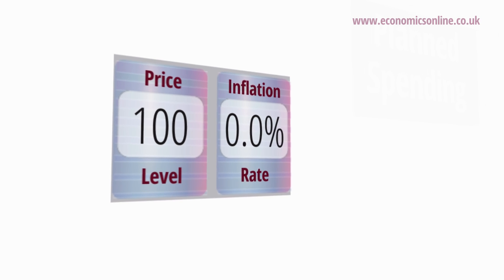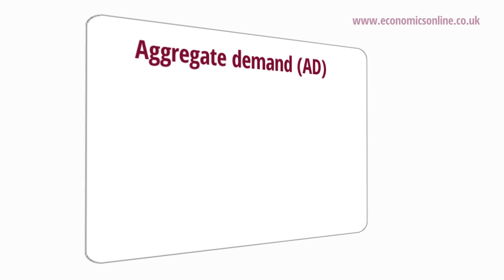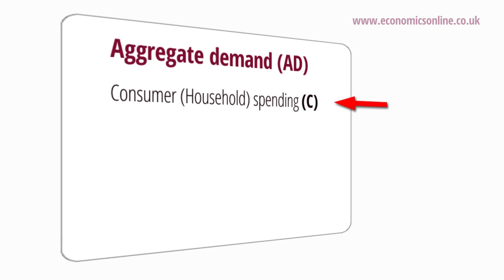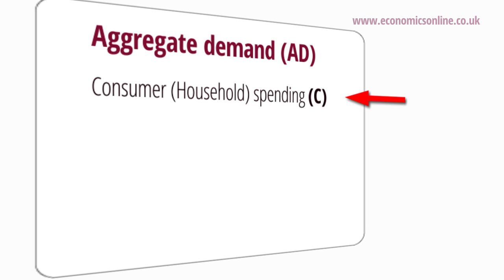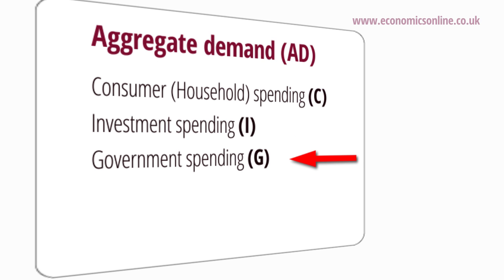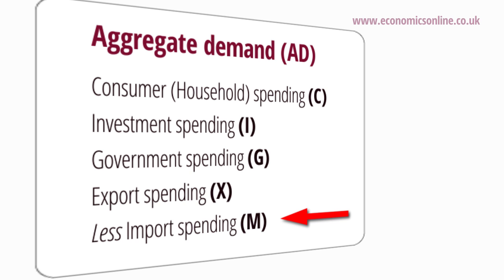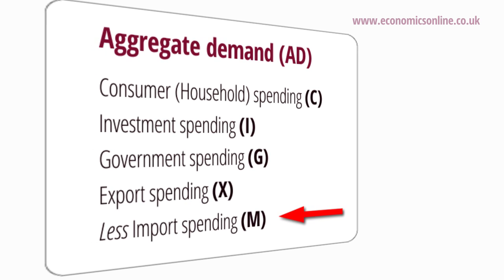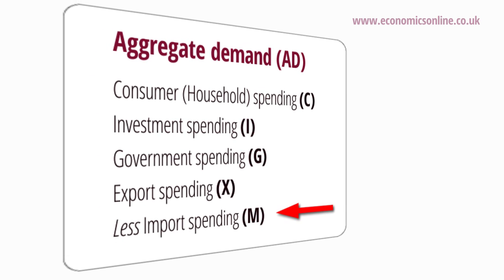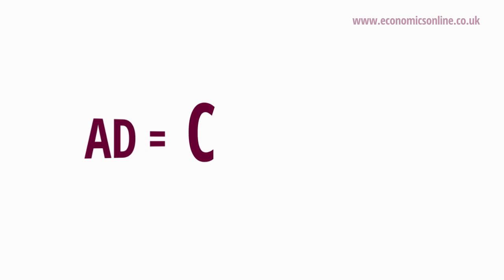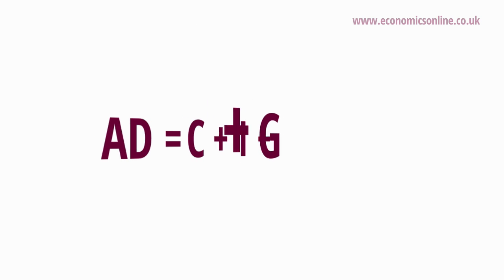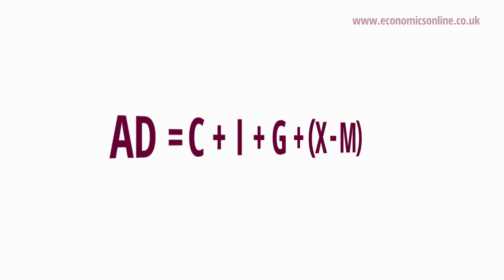An economy's aggregate demand, or AD, is comprised of private sector spending, of which consumer spending is the largest component, spending by firms on capital goods called investment, government spending on public goods, merit goods and transfers, plus net export spending, which is overseas spending on an economy's exports less spending on imports. From this, we derive the AD equation, which is AD equals C plus I plus G plus X minus M.